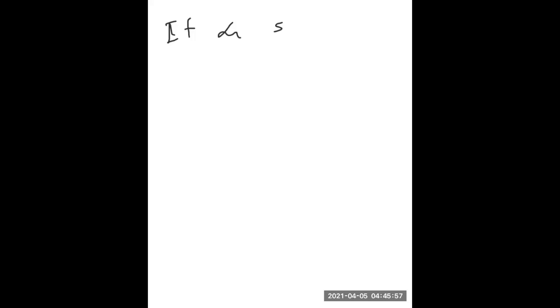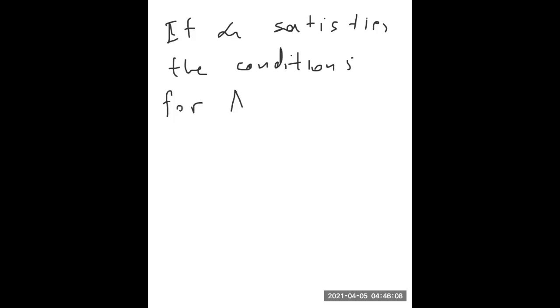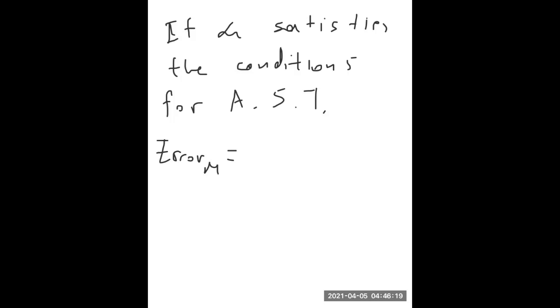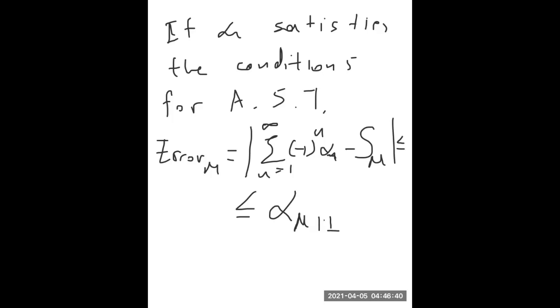We also have something for the error. If a_n satisfies the conditions for the alternating series test, then the error up to the m-th term — the difference between the value of the series and the partial sum up to m — is bounded by the next term. That is, it is bounded by the absolute value of the (m+1)-th term of the series, or equivalently, the value of a_(m+1) for the positive sequence.